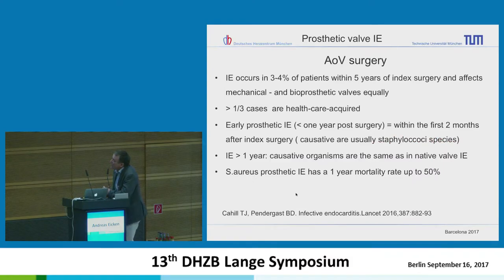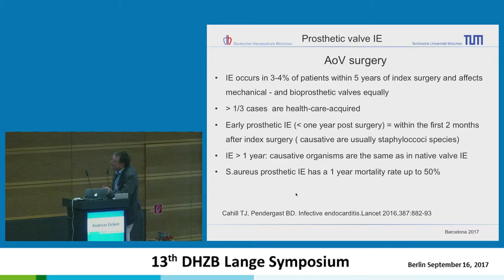Prosthetic aortic valve endocarditis occurs in three to four percent of patients within five years of index surgery and affects mechanical and bioprosthetic valves equally. This is from a major Lancet publication from last year. More than one third of cases are healthcare acquired. Early prosthetic IE is usually caused by Staphylococci. If Staph aureus affects a prosthetic valve in aortic position, mortality may be up to 50%.